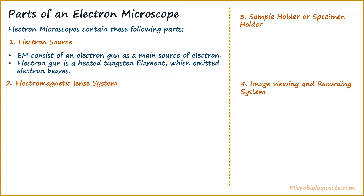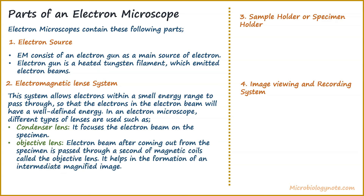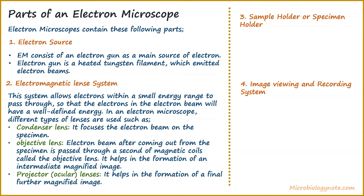The next part of an electron microscope is the electromagnetic lens system. This system allows electrons within a small energy range to pass through, so that the electrons in the beam will have a well-defined energy. Different types of lenses are used: the condenser lens focuses the electron beam on the specimen; the objective lens — through which the electron beam passes after coming out from the specimen — helps in the formation of an intermediate magnified image; and the projector or ocular lens helps in the formation of a final, further magnified image.